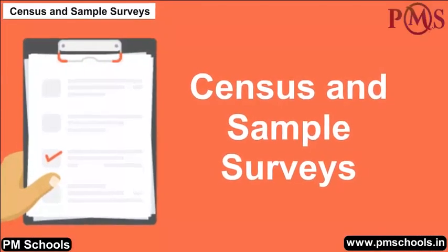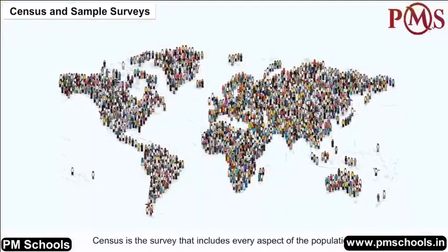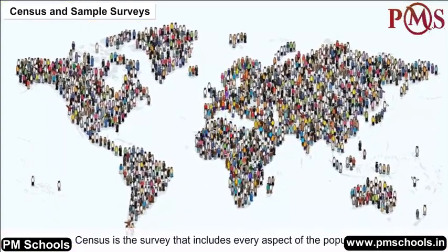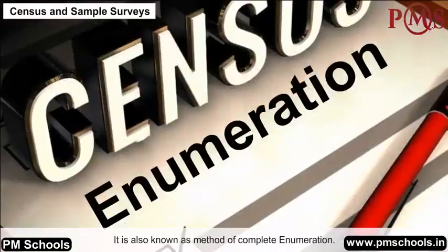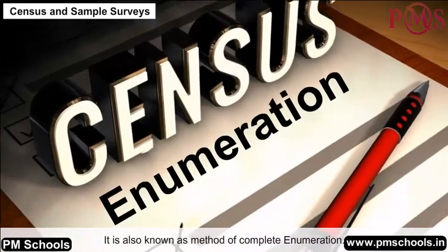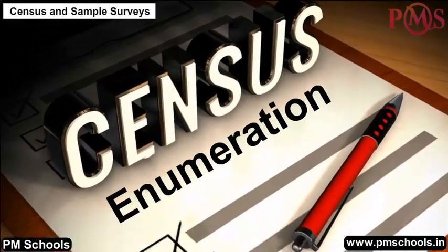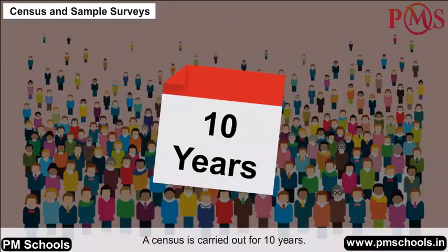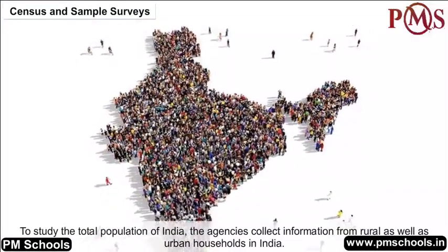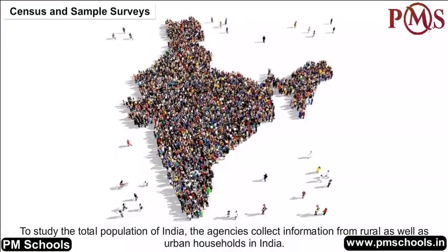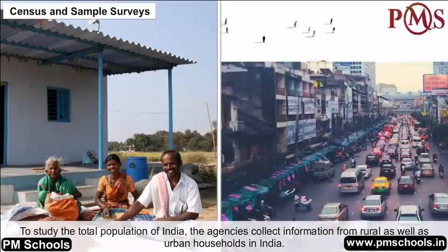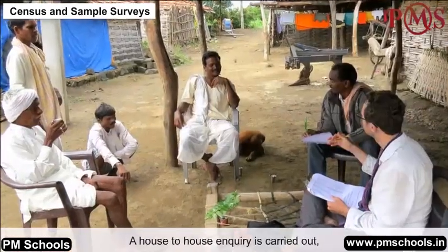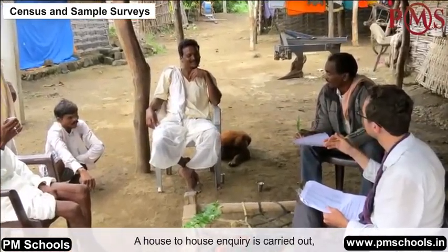Census and Sample Surveys: Census is the survey that includes every aspect of the population. It is also known as the method of complete enumeration. A census is carried out every 10 years. To study the total population of India, agencies collect information from rural as well as urban households. A house-to-house inquiry is carried out.